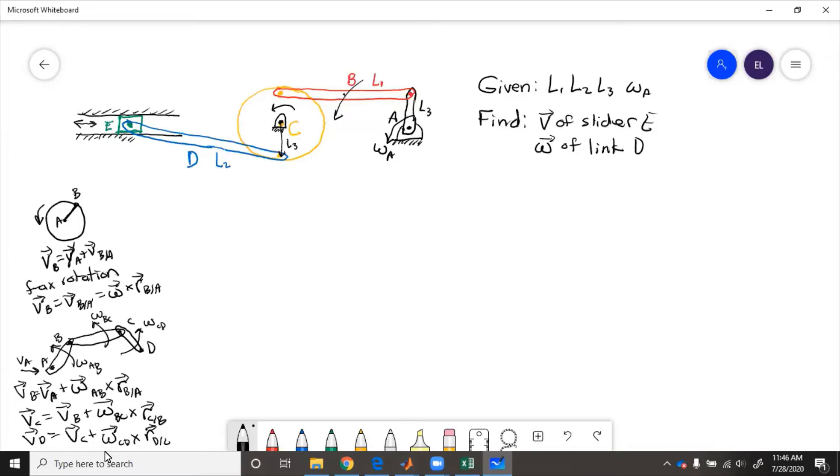So we'll do the same thing for this problem up here. So let's say, let's label each of these. This is going to be point A, point B, point C, point D. So to get the speed of the slider, the speed of point D, then we need to know what's going on throughout the whole entire chain. We'll say find these at the instant shown.